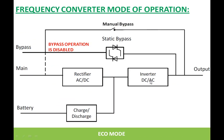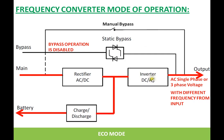The other mode is the frequency converter mode. This mode is used when the load requires a different frequency than the incoming mains frequency. For example, if the incoming mains is 50 Hz and the load requires 60 Hz, this mode can be used so that a different frequency is available at the UPS output. Under this mode, the bypass must be disabled because the load will not accept the incoming mains frequency.